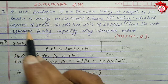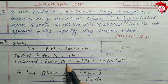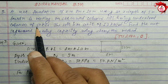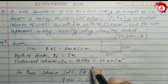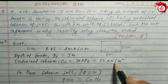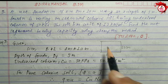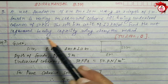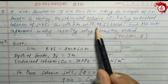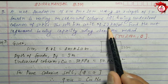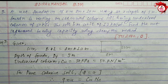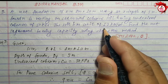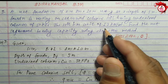The foundation is resting on unsaturated cohesive soil having undrained cohesion. What is the undrained cohesion? The soil has a unit weight of 19 kilo Newton per meter cube. That is the unit weight of the soil.